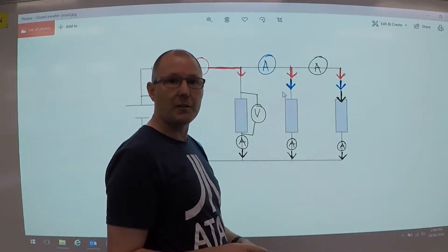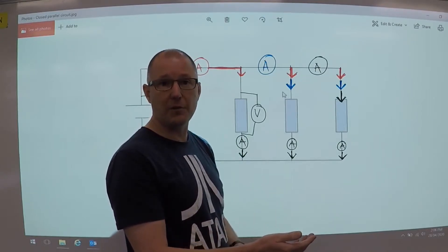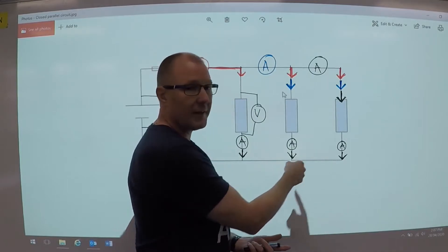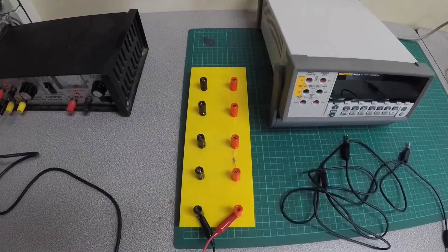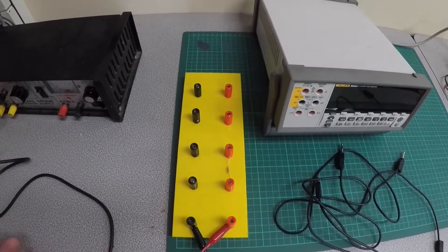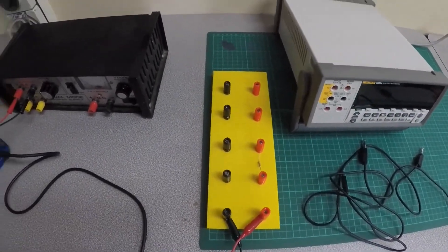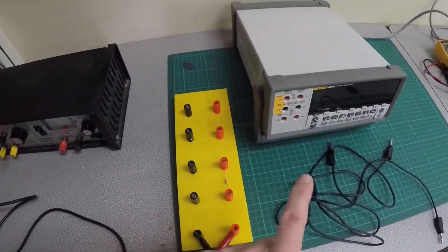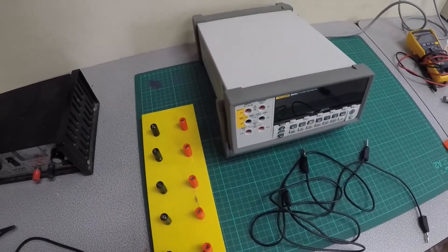If you wanted to measure the current going through individual loads, you just put ammeters in series with each individual load. I'm going to show you how to connect multimeters in a circuit. What we've got is a power supply, we've got our board with one resistor, and we have our multimeter.